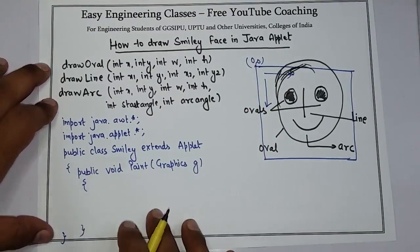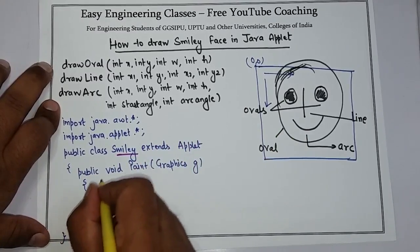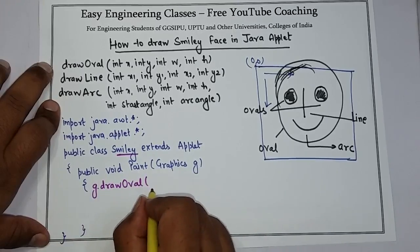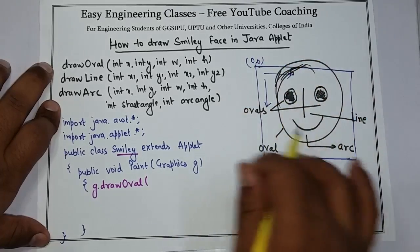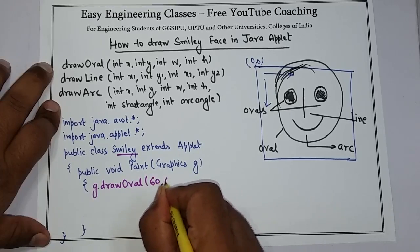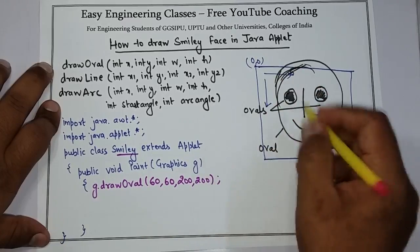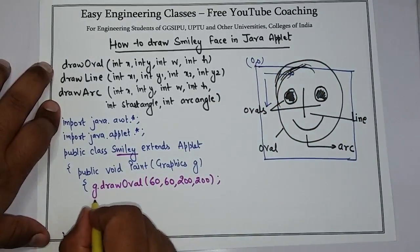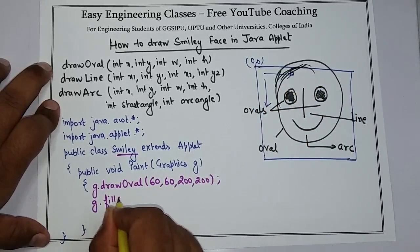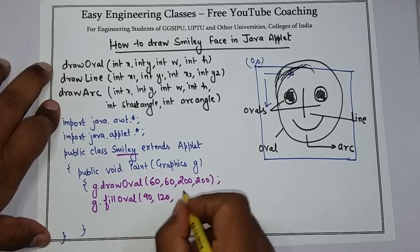This is the structure of the program. I have created a class with the name Smiley which is extending the Applet class, with a public void paint method. To draw the face outline, the width and height I am taking as 200, 200 - this is basically for the face or the outline of the face. Then to draw the eyes or ovals with color, I have to use fillOval, so I am using g.fillOval, then x and y.